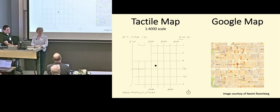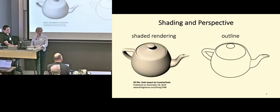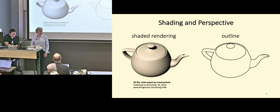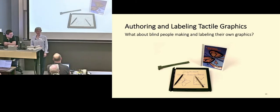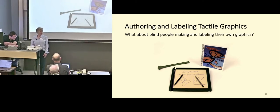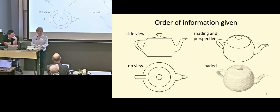Two related aspects that are hard to convey through touch are shading and perspective. Using the classic Utah teapot as an example: among different outline views, the side view makes the most sense to touch because it preserves proportion and the relationship between parts. Shading, created by how light falls on surfaces, produces smooth areas in the middle of what appear to be solid objects — which makes no sense to the sense of touch. Removing shading and shadows from tactile images helps declutter them and makes them more sense-making for touch.